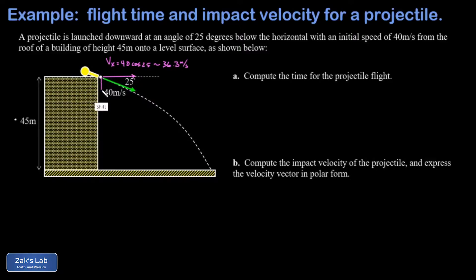The y component is downward and that initial y velocity is going to have a magnitude of 40 sine of 25, and when I run the numbers on that it comes out to 16.9 meters per second. Now keep in mind that's a magnitude, and when we plug into the kinematics formulas it needs to carry a minus sign because it's downward.